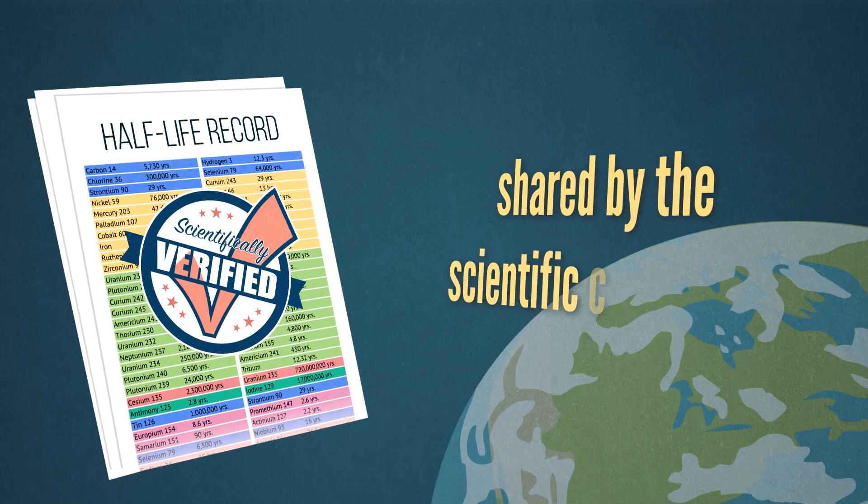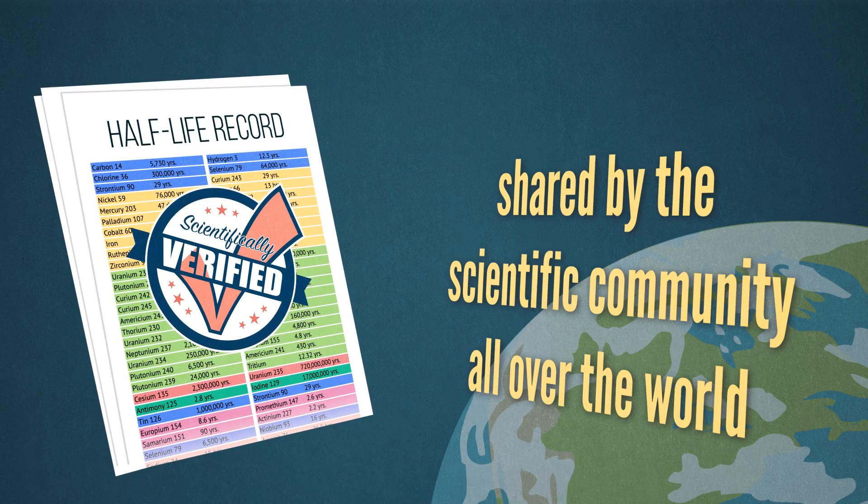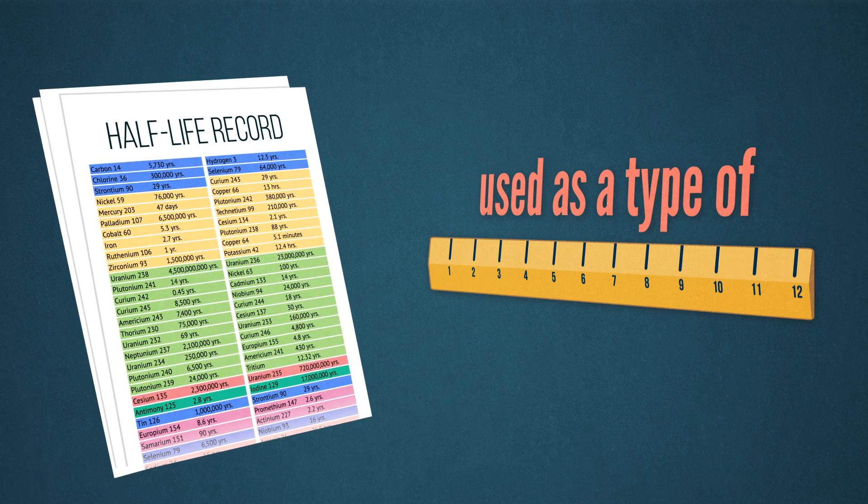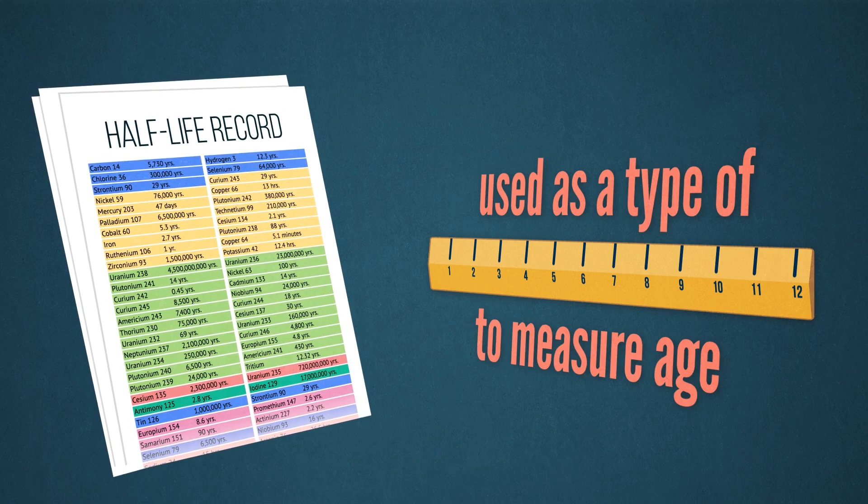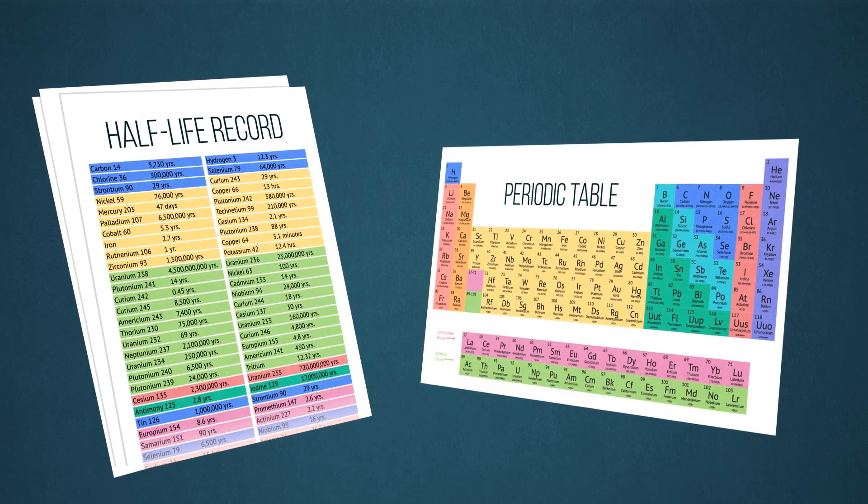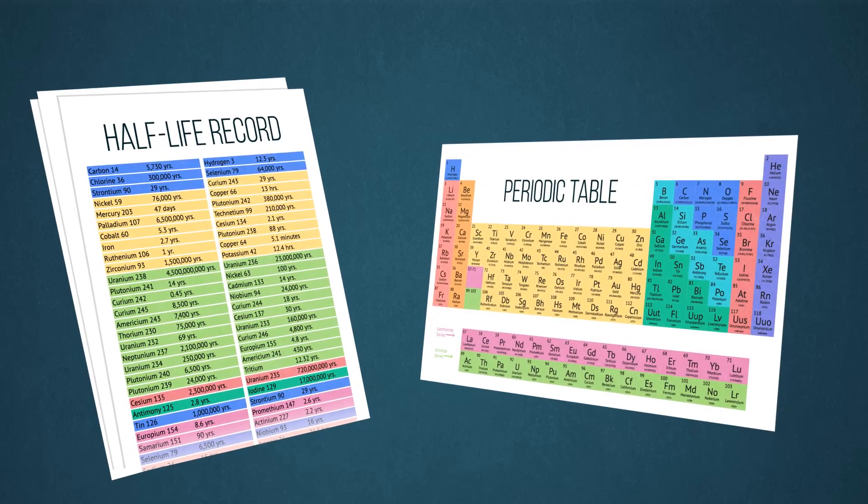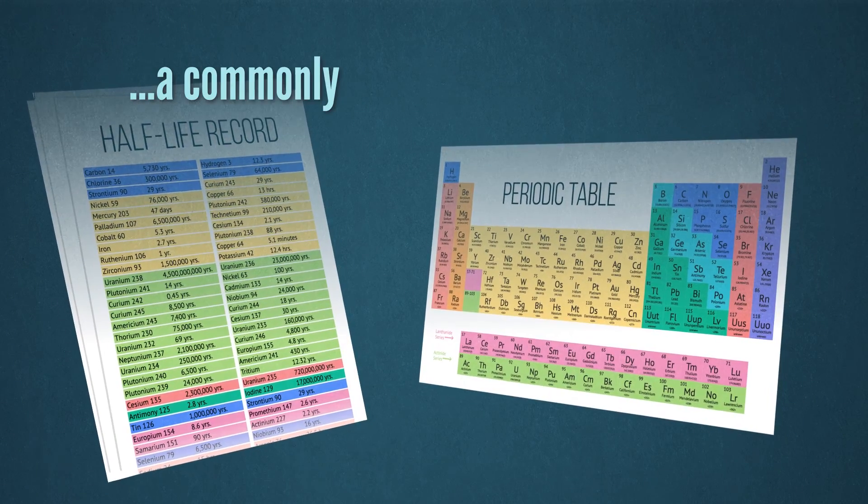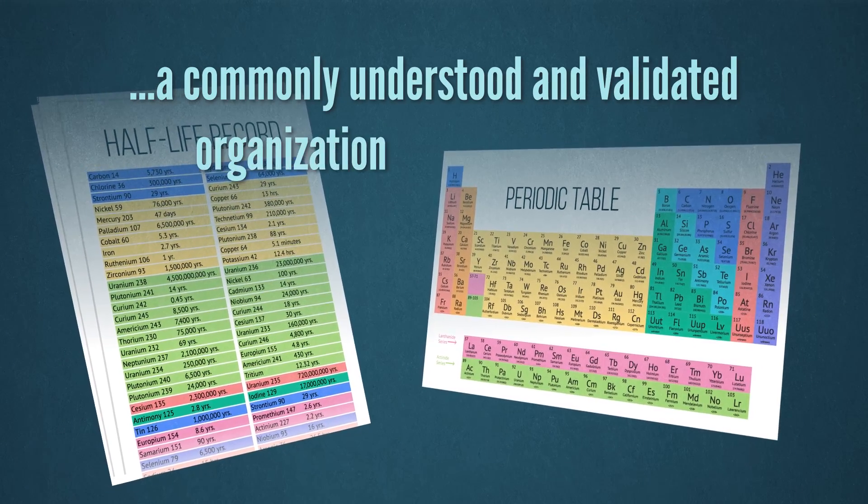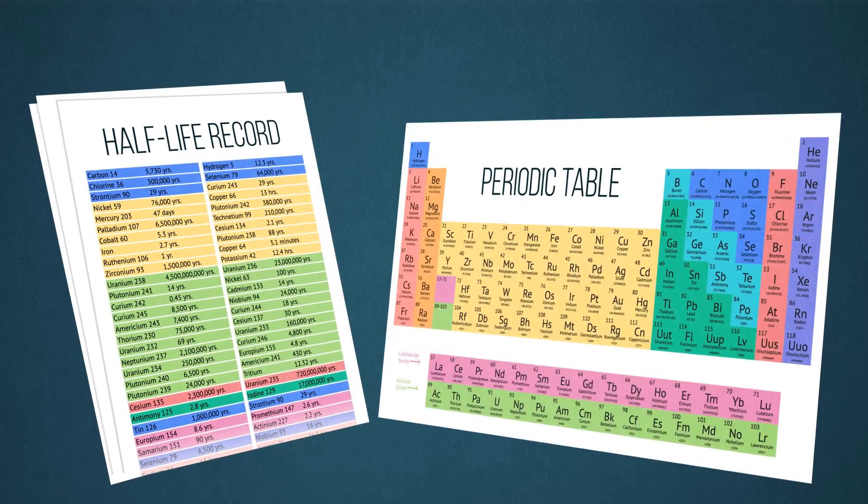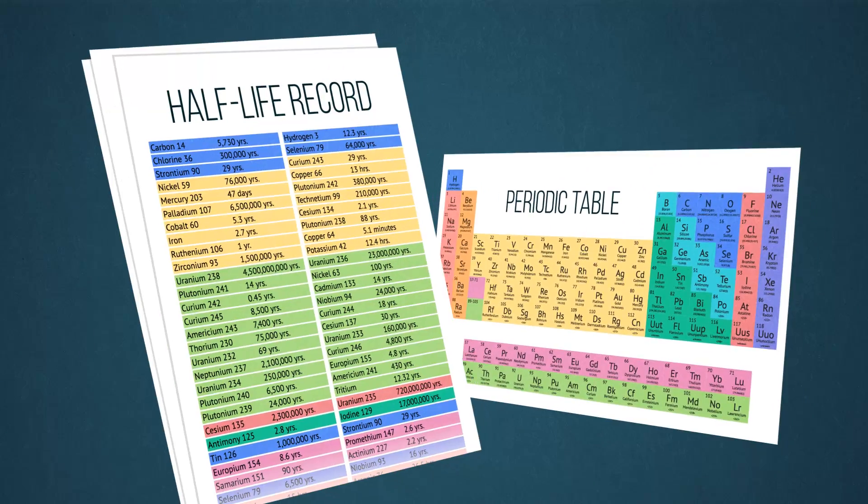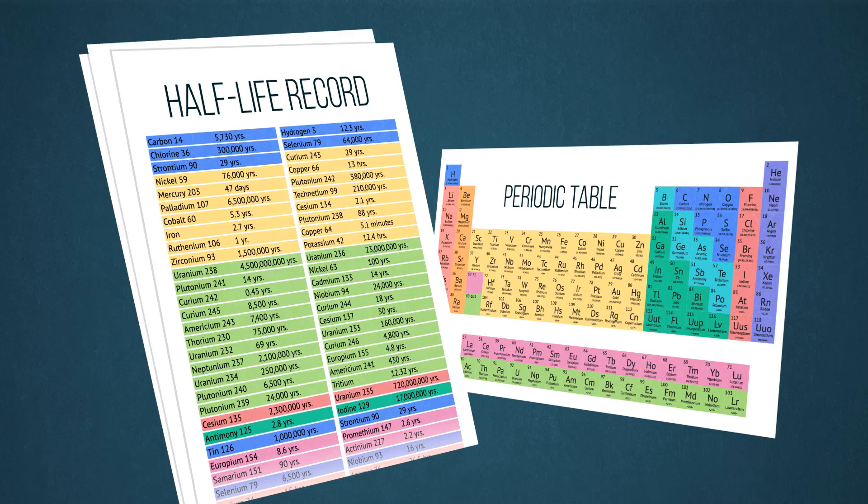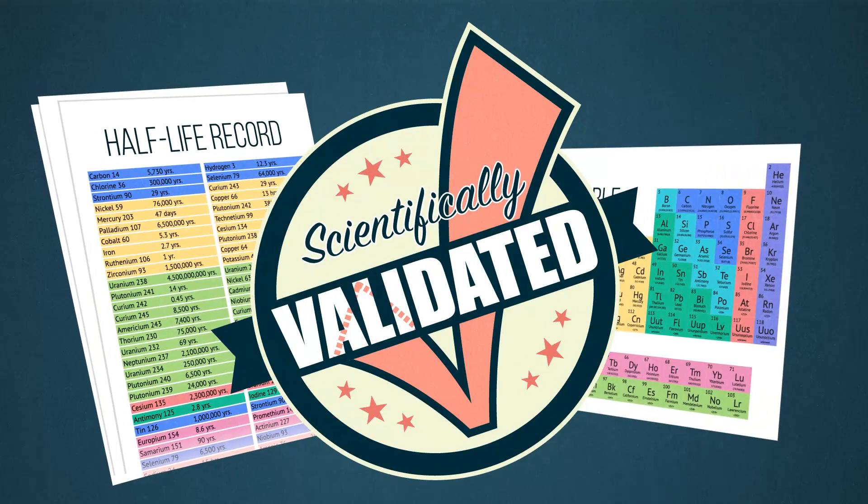These half-lives have been verified and are shared by the scientific community all over the world. They are now used as a type of ruler to measure age, in much the same way that elements have been organized by their proton count on the periodic table. It is a commonly understood and validated organization of measurements. The periodic table of elements and this table of half-lives work together and are both well-validated systems of measurement.